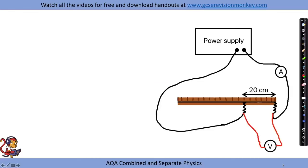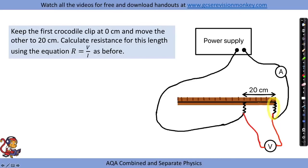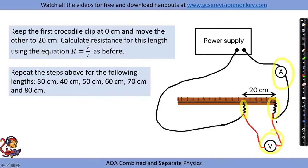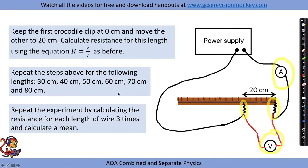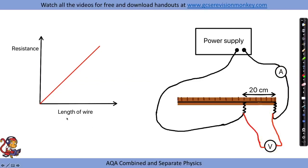To change the length of wire, keep the first crocodile clip at zero and move the other to 20 centimetres, then repeat the readings. Continue for lengths of 30, 40, 50, 60, 70, and 80 centimetres. Repeat each measurement three times and calculate a mean. When you plot the graph, as the length of wire increases the resistance also increases, and a straight line through the origin shows a directly proportional relationship.